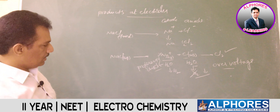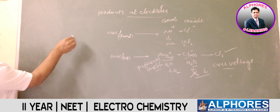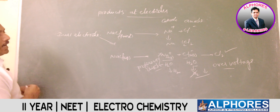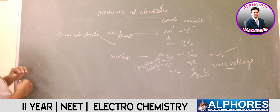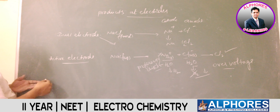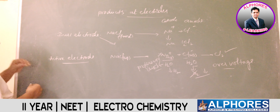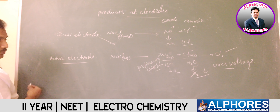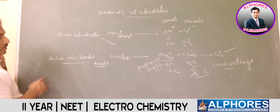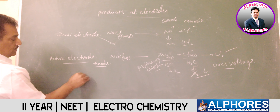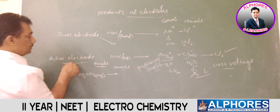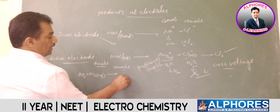With inert electrodes, all these reactions can be assumed normally. But now we must consider the participation of active electrodes. An active electrode is made from the metal already present in the electrolyte. Active electrodes are active only at the anode, never at the cathode. To understand this, consider AgNO₃ aqueous solution — at the anode, NO₃⁻ is ready to undergo oxidation.